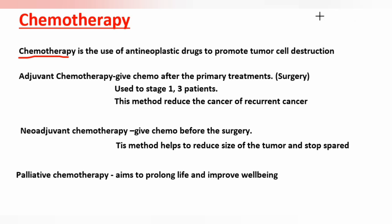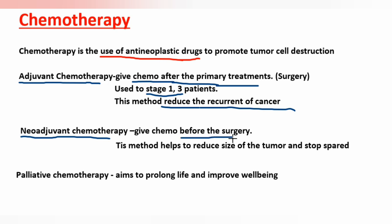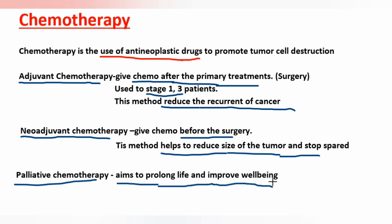Chemotherapy is the use of antineoplastic drugs to promote tumor destruction. Adjuvant chemotherapy is given after primary surgery and is used for stage one to three patients to reduce cancer recurrence. Neoadjuvant chemotherapy is given before surgery to help reduce the size of the tumor and stop its spread. Palliative chemotherapy aims to prolong life and improve well-being.